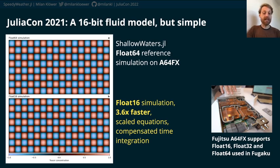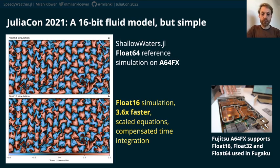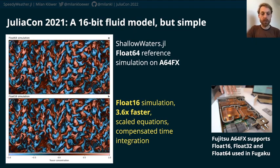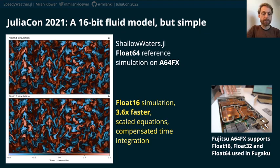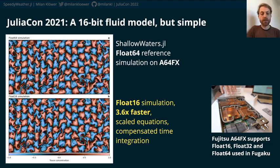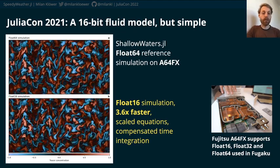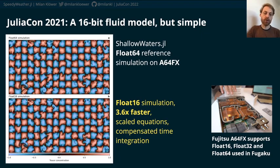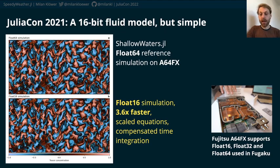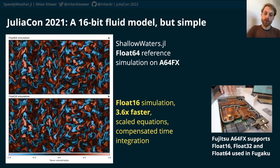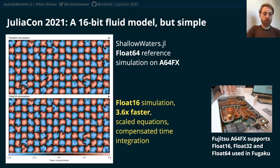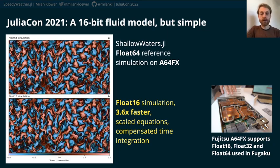Last year at JuliaCon, I presented a 16-bit model — 16-bit meaning that all the equations can actually be solved just in half precision, instead of double precision which is usually the standard. ShallowWaters.jl was ported to Fujitsu's A64FX chip, basically the first modern CPU that supports 16-bit arithmetic, and we applied a couple of tricks. By scaling the equations and using some compensated time integration, we got very much the same result whether using double or half precision, but the half-precision version being almost four times faster. The Fujitsu A64FX chip is also the one used in Fugaku, so it's basically a nice study to show how we can leverage the capabilities of modern supercomputers.